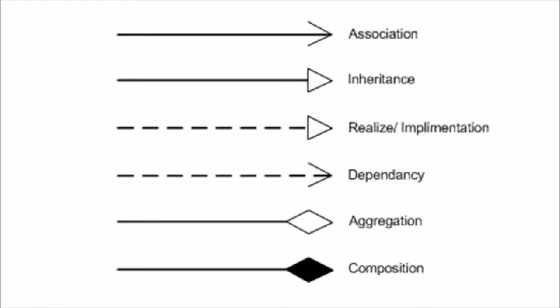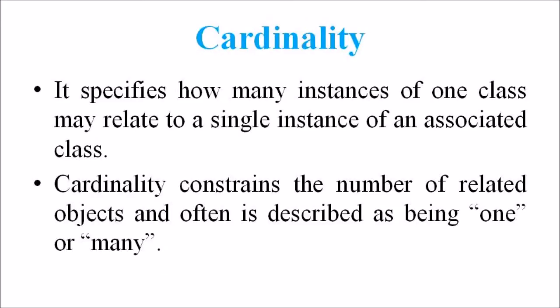While considering an association, another term that should be considered is cardinality. A cardinality specifies how many instances of one class may relate to a single instance of an associated class. Cardinality constrains the number of related objects and often is described as being one or many.